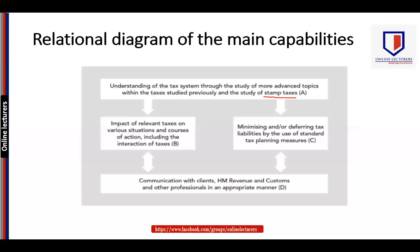As far as Part C is concerned: minimizing or deferring tax liability by the use of standard tax planning measures. In this particular paper, tax planning is of utmost value — you have to be very much in grip with the potential of minimizing your tax liability. You have to advise your client, and the best approach is to remain ethical while identifying the gaps where you can minimize liability using basic principles. For example, how to best utilize personal allowances, capital allowances, how to use tax losses efficiently, how to use the benefits of husband and wife tax bands, and so on.